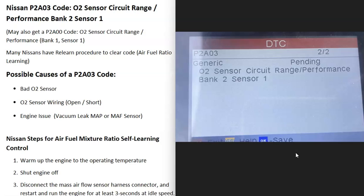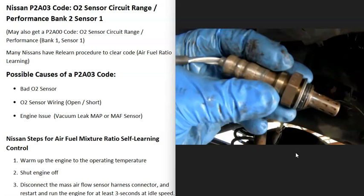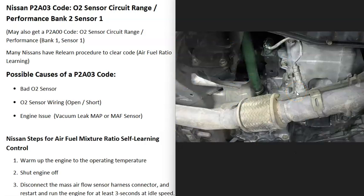What are some possible causes of a P2A03 code? The first thing that could cause it is that the sensor just failed and needs to be replaced. You can test it if you want—there are different ways to go about testing it. I made some videos on this; I'll put a link below if you need to check that out. But the first thing that could cause this is that the sensor has just gone bad and needs to be replaced.